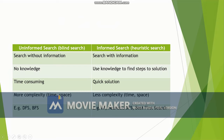Now, search strategies are of two types. One is uninformed search, which is also known as blind search. The other one is informed search, or heuristic search. Let us see the difference between them.